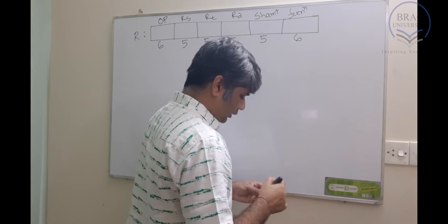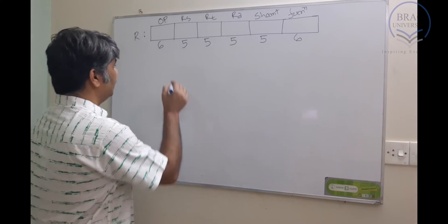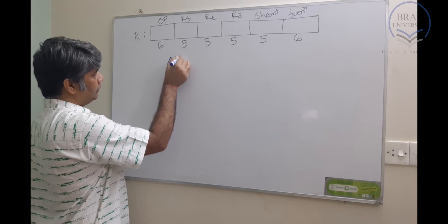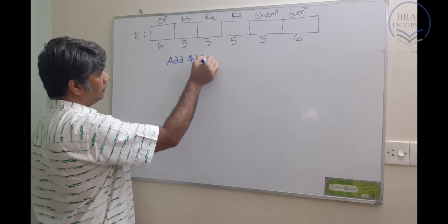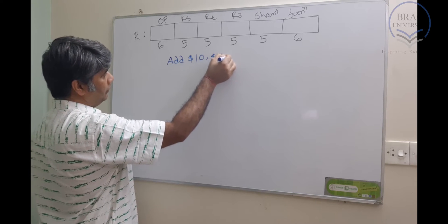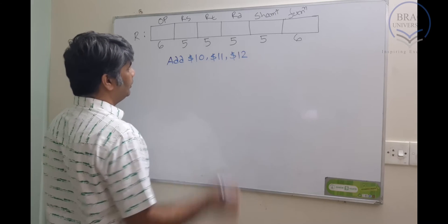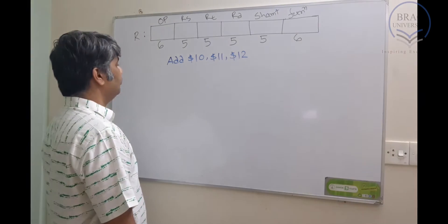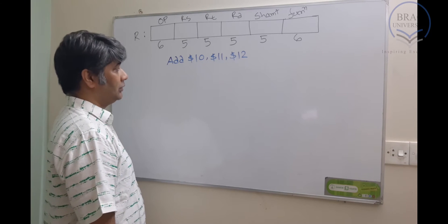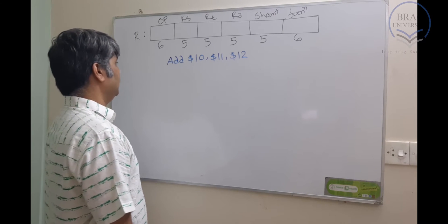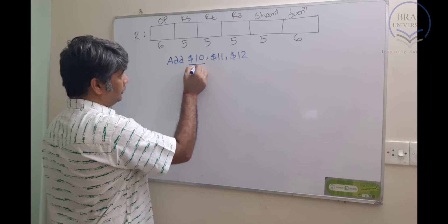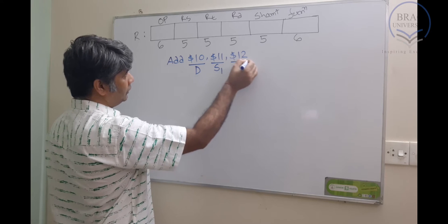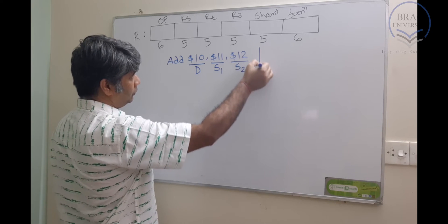Let's say we have an R-type instruction which is: add $10, $11, $12. So this is our instruction. This is destination, this one is source 1, and this one is source 2.